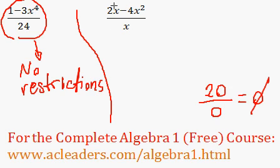But what about over here? 2x minus 4x squared over x. Now, if this x is 0, then we get 0 in the denominator. And that would be a restricted value. We just can't have a 0 in the denominator.